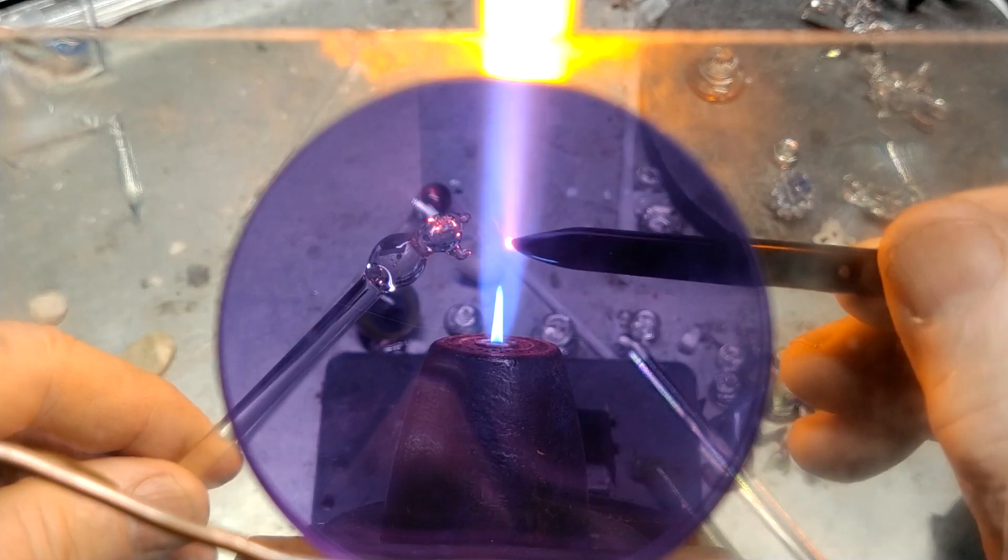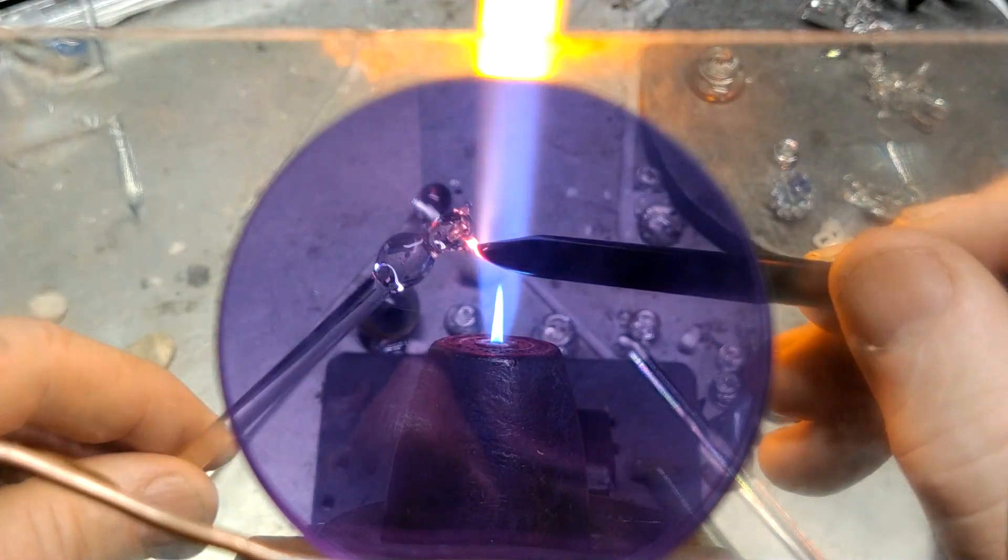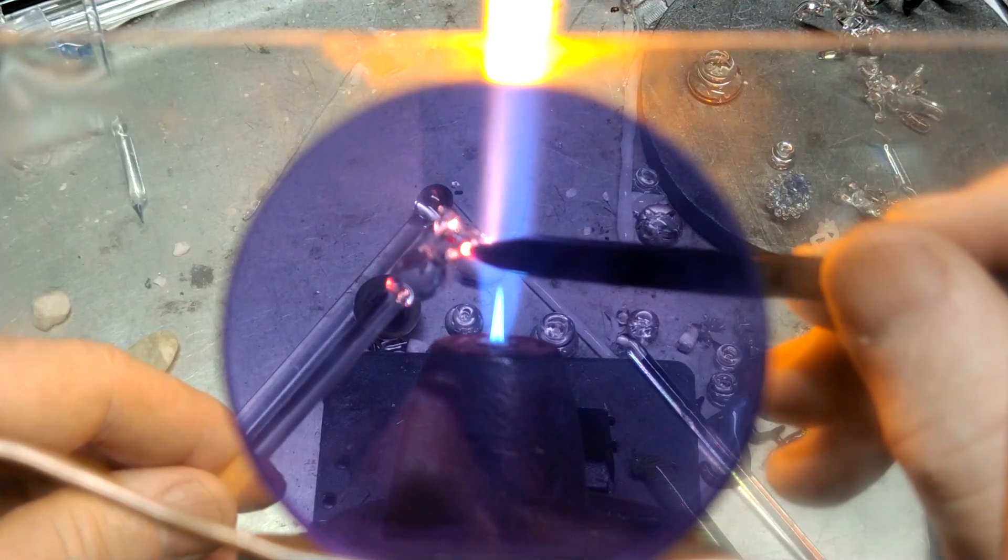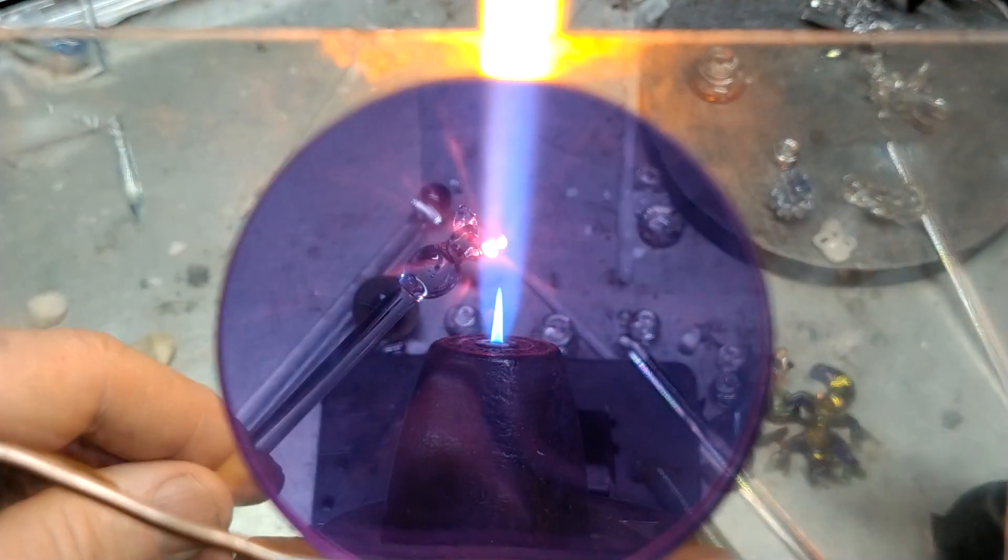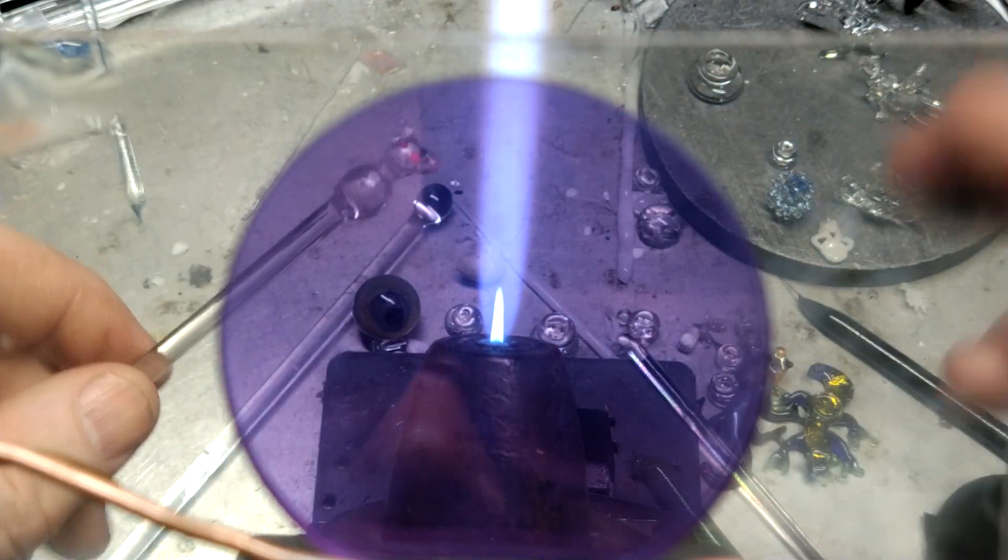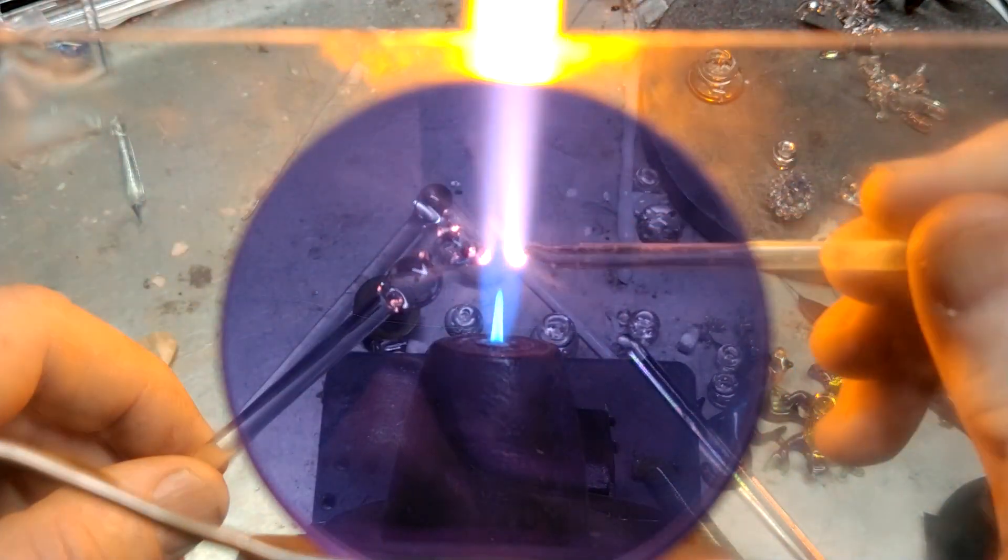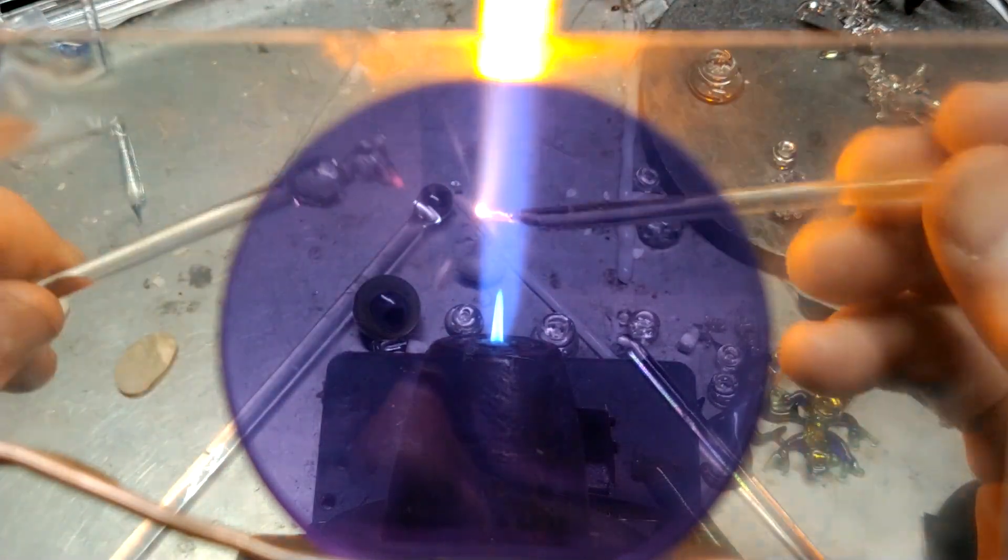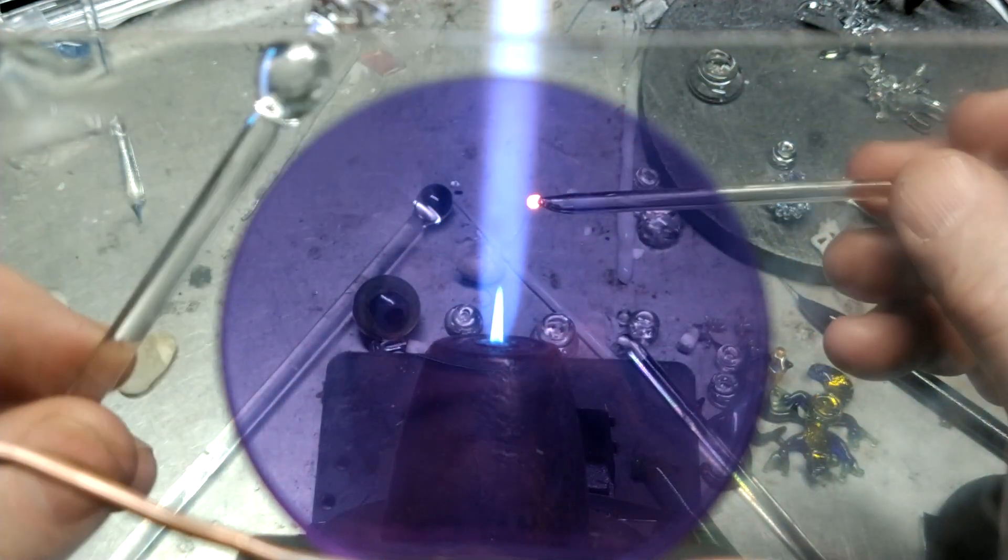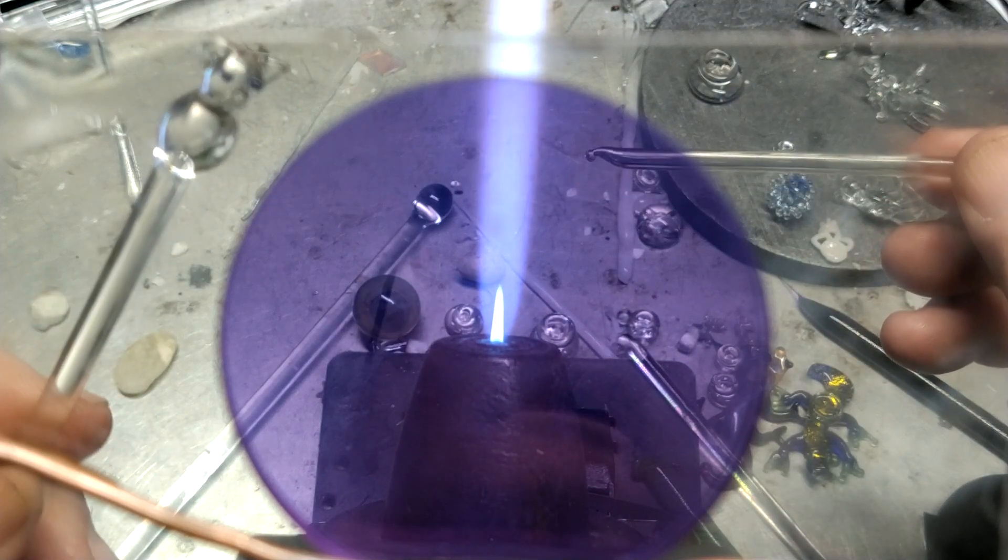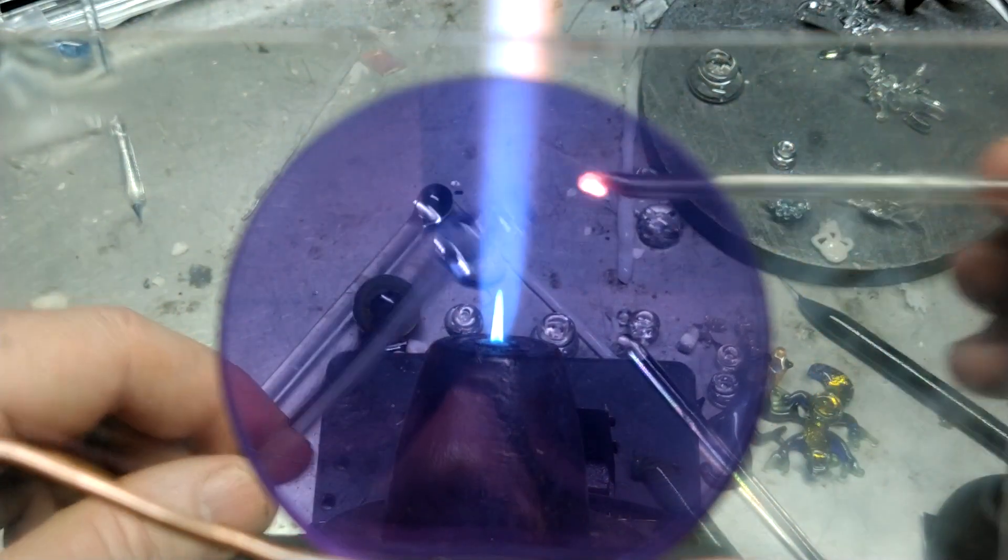And now eyes. Eyes are the windows to the soul. And if you can put eyes on anything that you do, I usually don't put them on my horses. But everything else, the dragons, everything, I usually try to put eyes on it. Okay. There you go. Next.